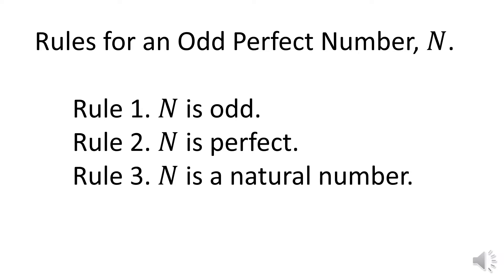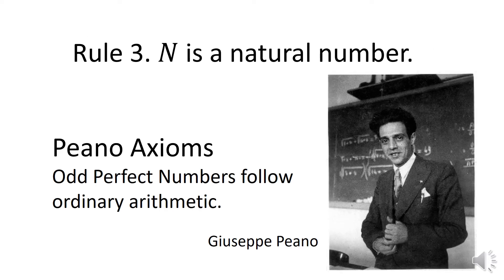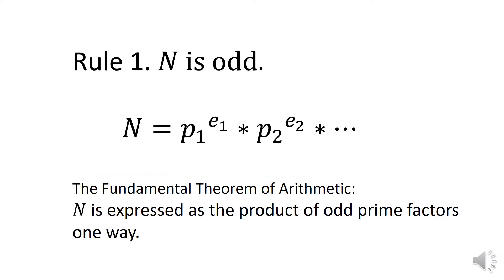Rule three: N is a natural number. Rule three states that N is a natural number, a positive integer. Italian mathematician Giuseppe Peano defined natural numbers with his axioms. He defined and proved that the ordinary rules of arithmetic apply to natural numbers. Because N is a natural number according to rule three, all the rules of arithmetic for natural numbers apply to odd perfect numbers, such as addition and multiplication.